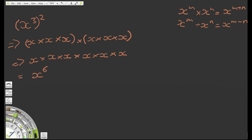So x to the power of 3 raised to the power of 2 becomes x to the power of 6 — because 3 times 2 is 6. We can rewrite x to the 3 to the power of 2 as x to the 3 times 2, which becomes x to the 6. So our third rule of indices is: x to the m raised to the power of n equals x to the m times n, or x to the mn.